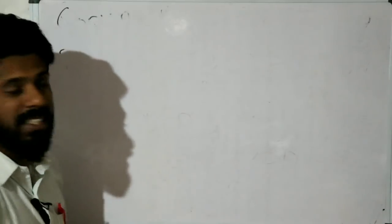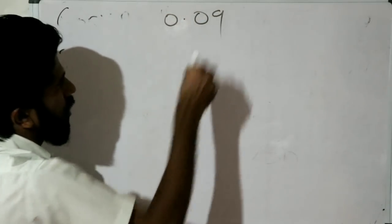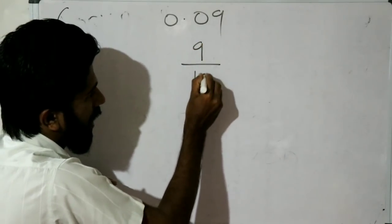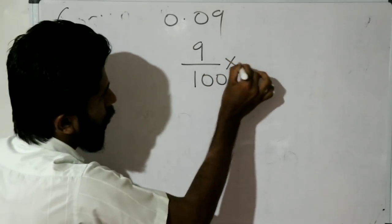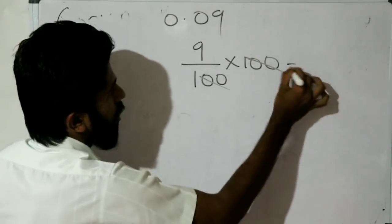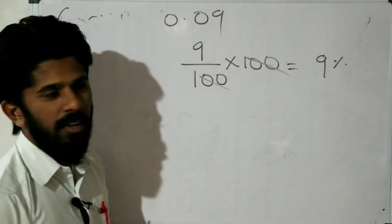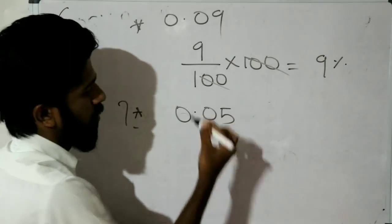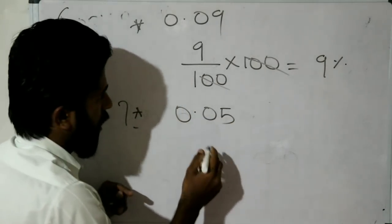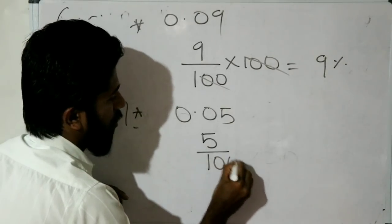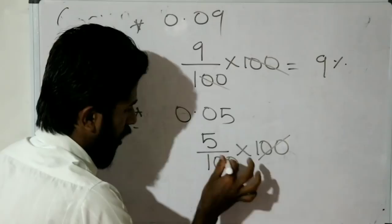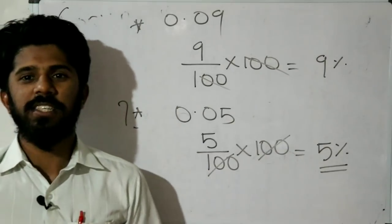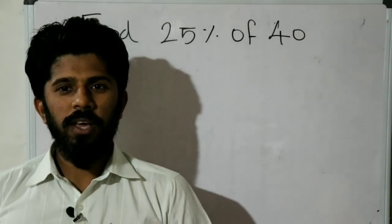Next: 0.09. 9 divided by 100 into 100 — cancel — the answer is 9 percentage. Next: 0.05. 5 divided by 100 into 100 — cancel — the answer is 5 percentage. So that is how we convert decimals to percentages.